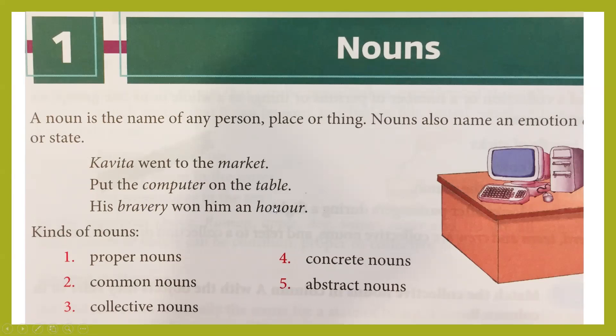So we revise: a noun is a name which is given to any place, person or thing. Now let us see the different types of nouns — the kinds of nouns: proper nouns, common nouns, collective nouns, concrete nouns, and abstract nouns. Let's discuss them one by one.